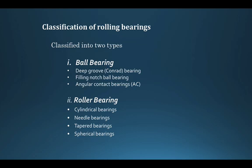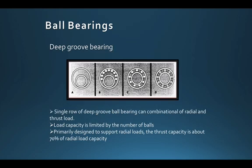The different types of rolling contact bearings available in industry include: first, ball bearings, where the rolling element is a spherical ball. Under ball bearings, we have deep groove ball bearing, filling notch ball bearing, and angular contact ball bearing. The second category is roller bearings, where instead of a spherical ball we have cylindrical, needle, or tapered rollers. The deep groove ball bearing has a limited number of balls and is primarily designed to support radial loads, but also supports some thrust load — its thrust capacity is about 70% of its radial load capacity.